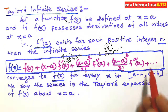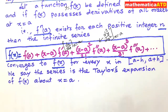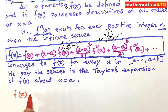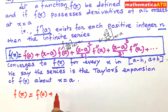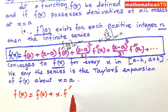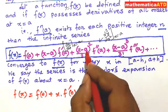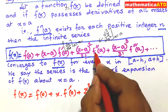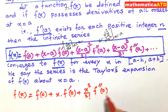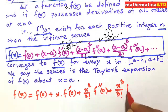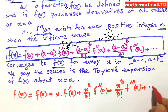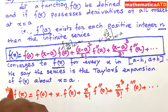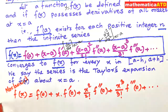Putting a equal to 0 in this Taylor's series, we find that f(x) is equal to f(0) plus x into f'(0) plus x² divided by 2 factorial into f''(0) plus x³ divided by 3 factorial into f'''(0) plus so on. This series is called the Maclaurin's Infinite Series, and it is obtained by setting a equal to 0.